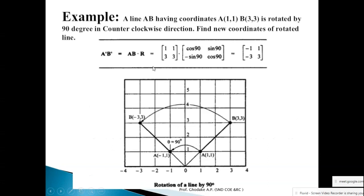Example: A line AB having coordinates A(1,1) and B(3,3) is rotated by 90 degrees in the counterclockwise direction. Find the new coordinates of the rotated line. Since the direction is counterclockwise, theta = +90 degrees (positive).